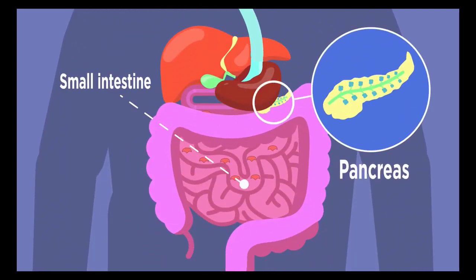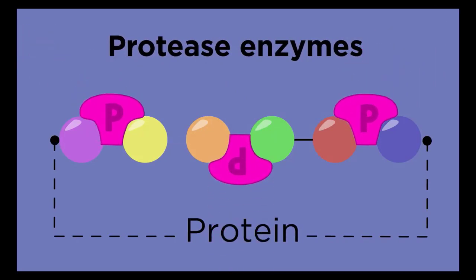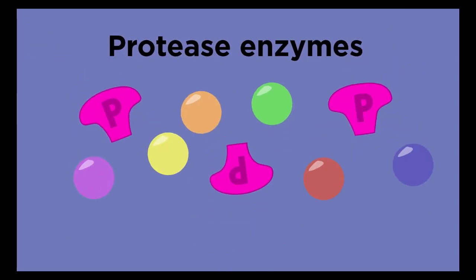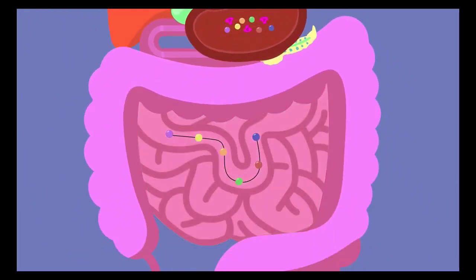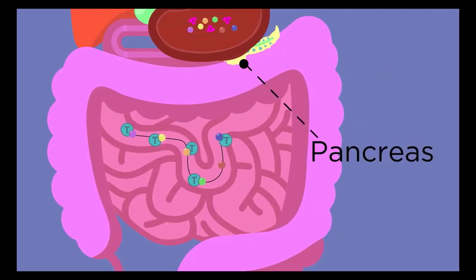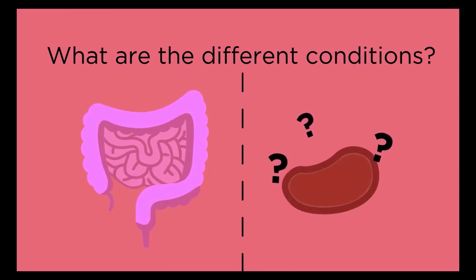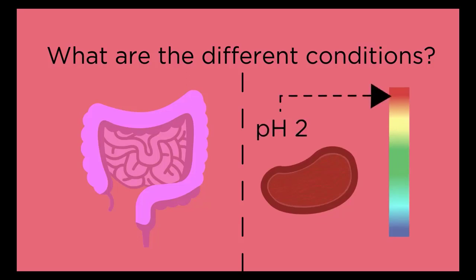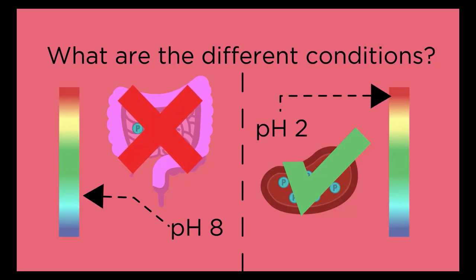Proteins are found in meat, fish, beans, and pulses; they are made of amino acids and are digested by protease enzymes. The protease pepsin breaks down proteins in the stomach, but doesn't work once food moves into the small intestine because the pH conditions differ. The stomach is very acidic at pH 2, while the small intestine has a higher pH of about 8. A different protease called trypsin is released into the small intestine from the pancreas for continued protein digestion.